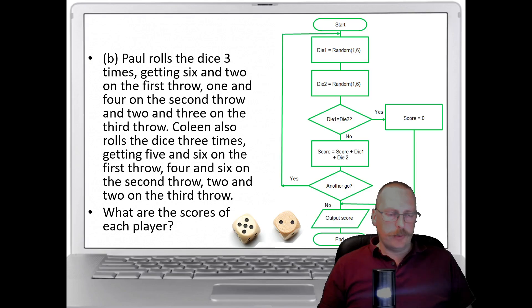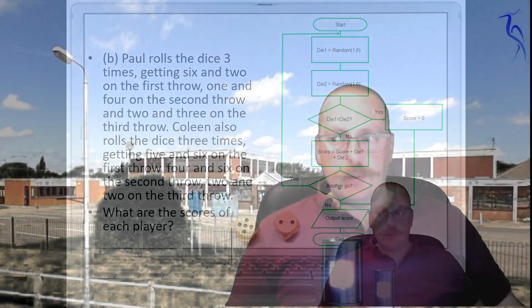And the last task that we need to look at is Paul rolls the dice three times getting six and two on the first throw, one and four on the second throw and two and three on the third throw. Colleen also rolls the dice three times getting five and six on the first, four and six on the second and two and two on the third throw. You need to use this flow diagram to work out the scores for Paul and Colleen and to find out which person won. So they're the tasks that you needed to complete for this week.